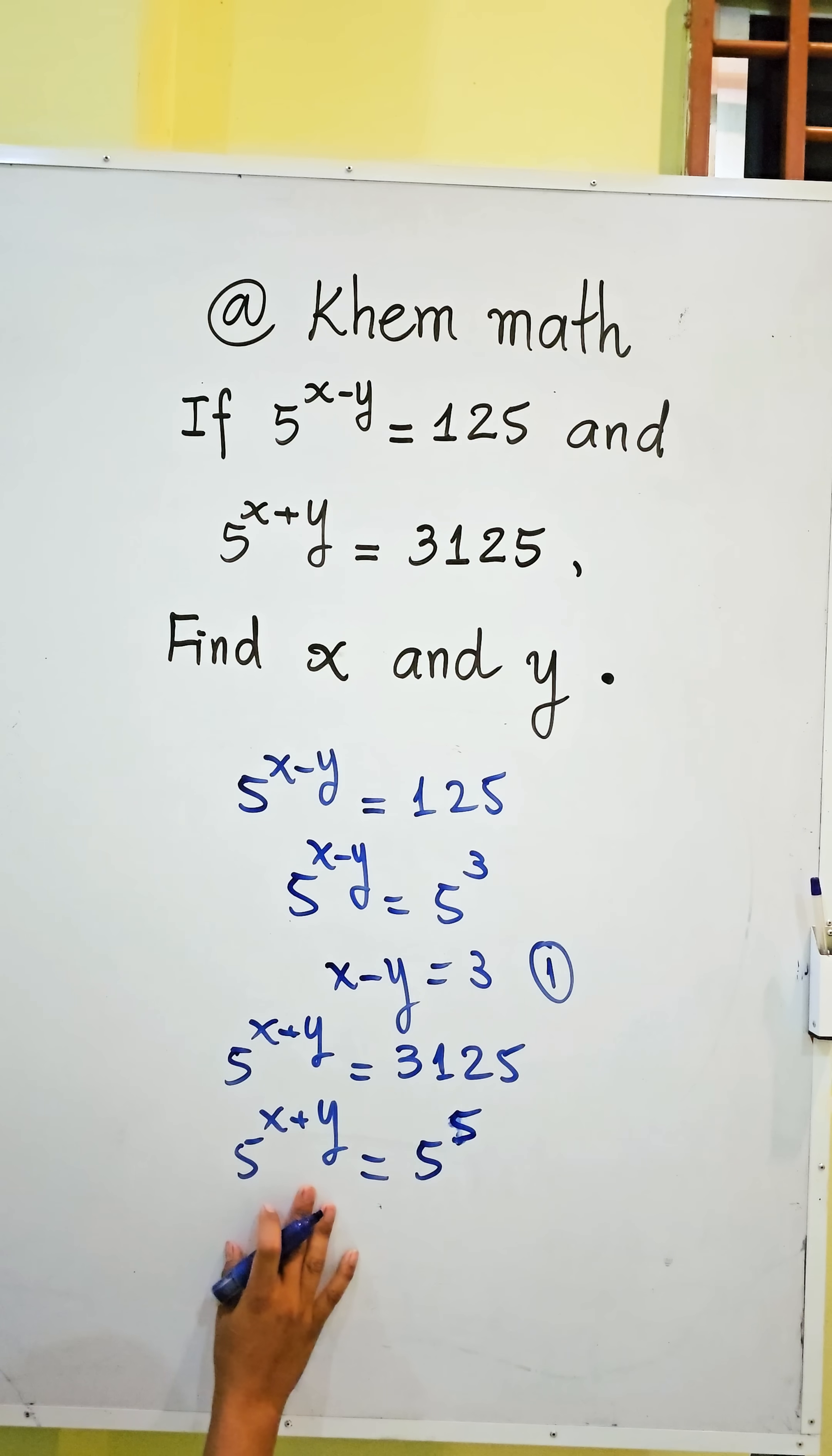We get x plus y equals 5, and let's call this the second equation.